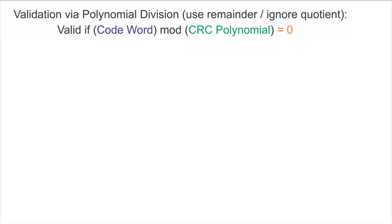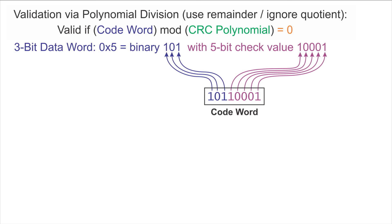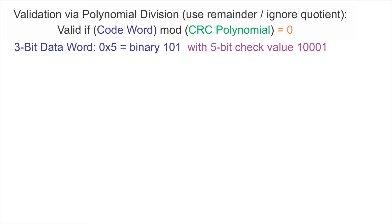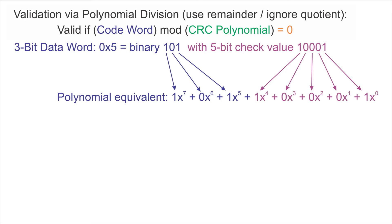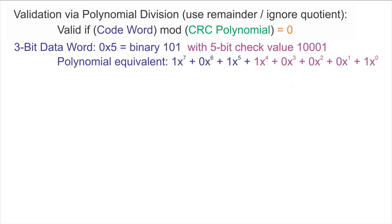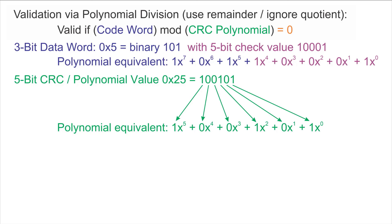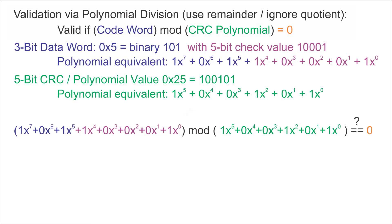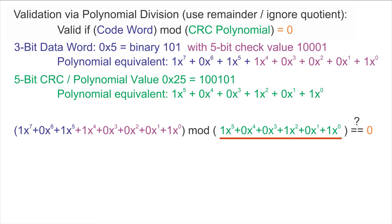We start with an example code word of 1, 0, 1, 1, 0, 0, 0, 1, which we know is a valid 8-bit code word — it has a 3-bit data value and a 5-bit check value. These 8 bits correspond to the polynomial x to the 7th plus x to the 5th plus x to the 4th plus 1. We use the same CRC polynomial x to the 5th plus x squared plus 1. The code word is valid if that polynomial mod the CRC polynomial equals 0.